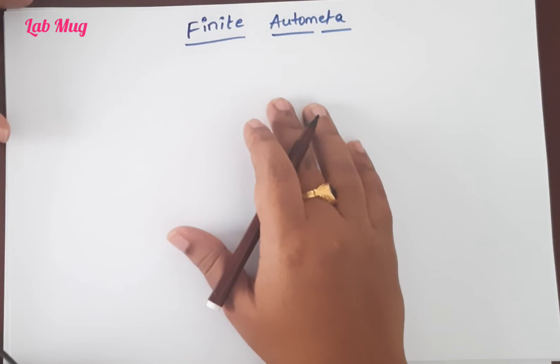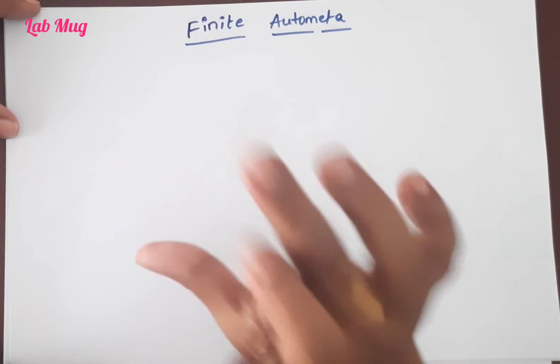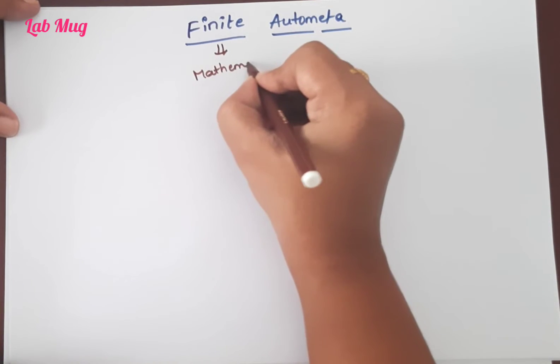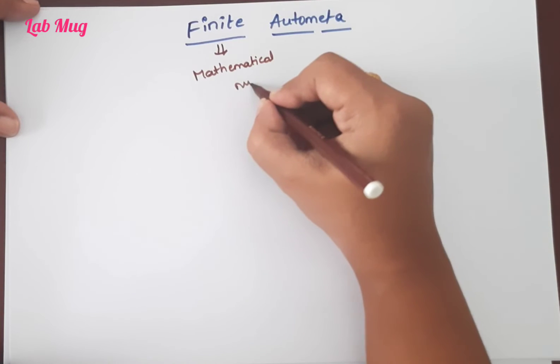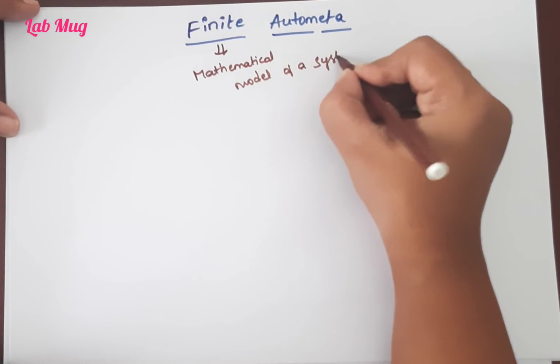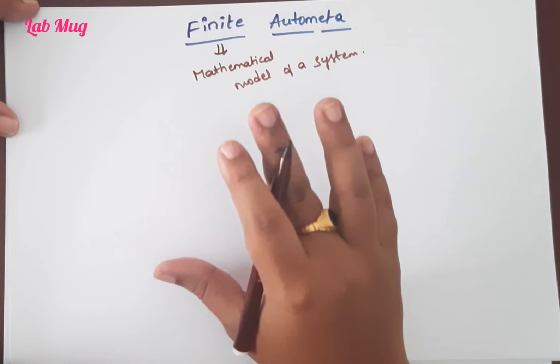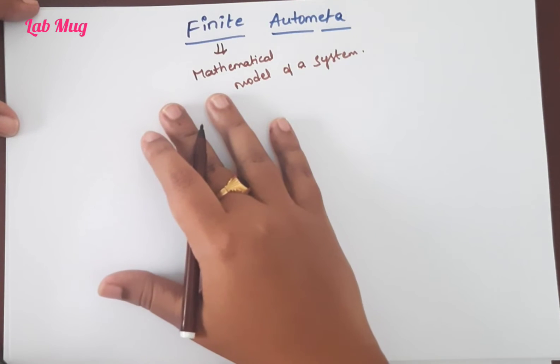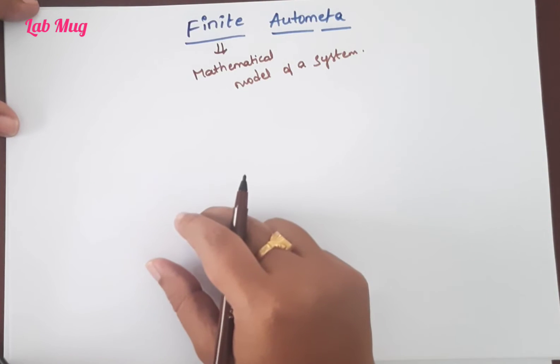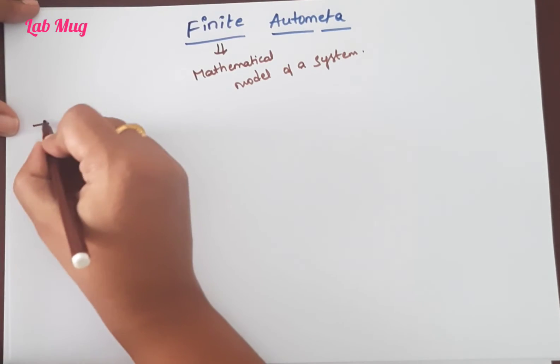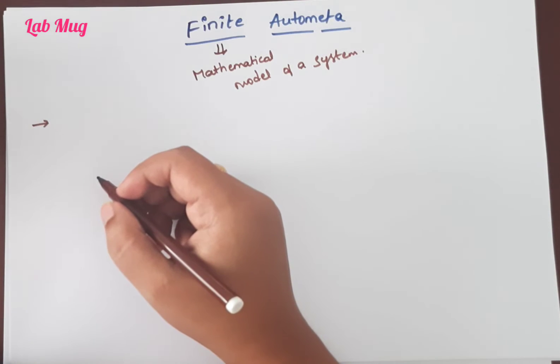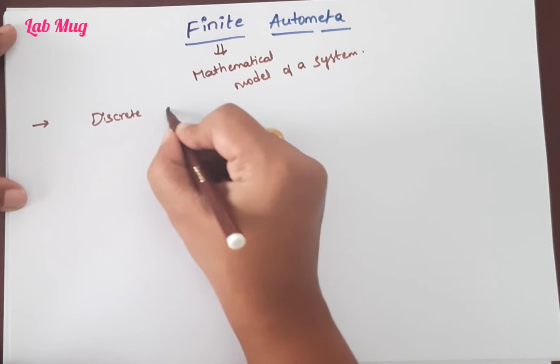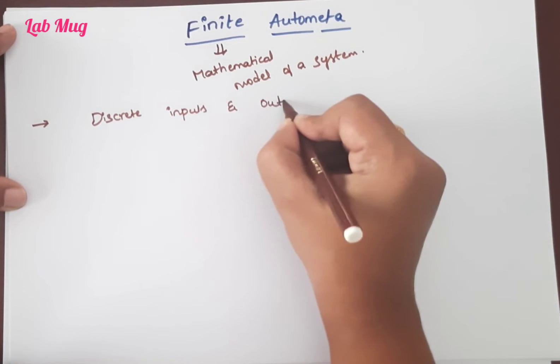Finite automata is a mathematical model of a system. This mathematical model consists of some inputs and outputs - specifically, discrete inputs and outputs.